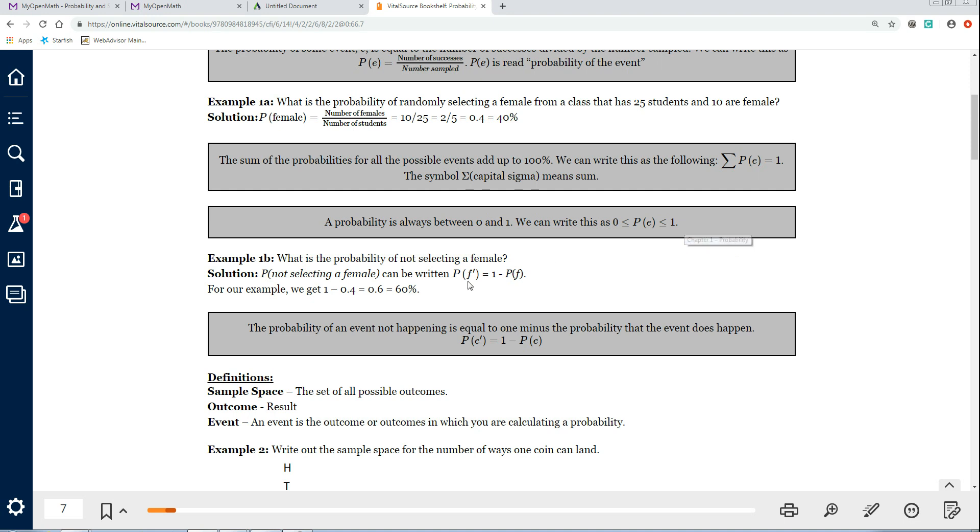The next problem here says, this is 1B, so it's referring to 1A. So what is the probability of not selecting a female? Okay, the probability of not selecting a female can be written this way, probability of F for female. But here's the important thing with this little hash mark. This little hash mark just is a fast way of saying not. So the probability of not selecting a female is equal to 1 minus the probability that you do select a female. That's because there's only two possibilities, either female or male.